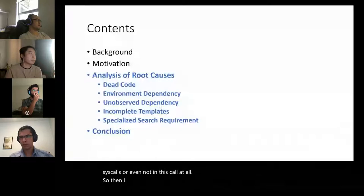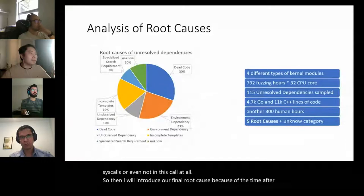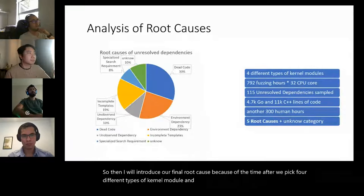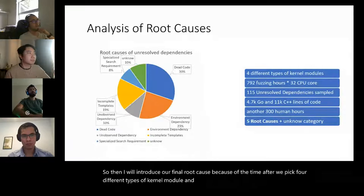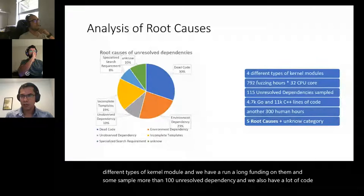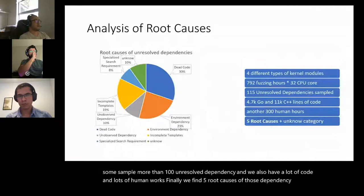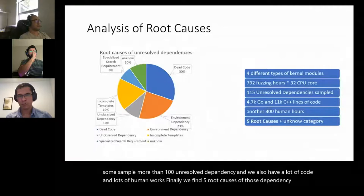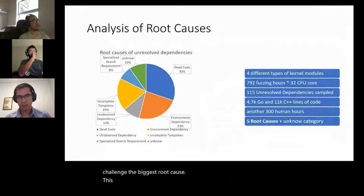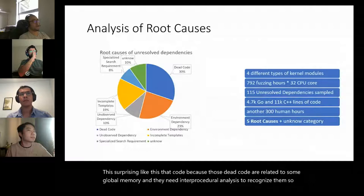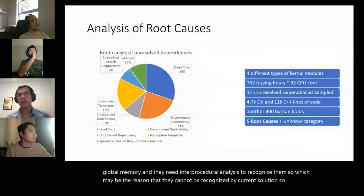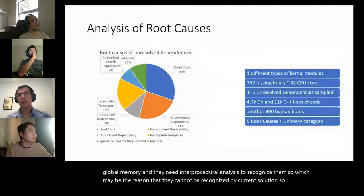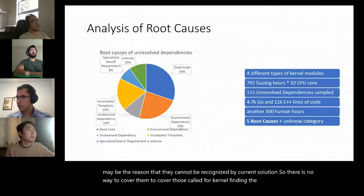We picked four different types of kernel module, ran long fuzzing sessions, sampled more than 100 unresolved dependencies, and performed extensive code analysis and manual work. We found five root causes of the dependency challenge. The biggest root cause is dead code — because that dead code is related to global memory and requires inter-procedural analysis to recognize it, which is why current solutions cannot cover it. The second root cause is environment dependency: the Linux kernel's environment is mainly input from hardware, so specific hardware input is needed to resolve those dependencies and cover related code.